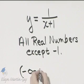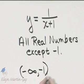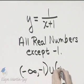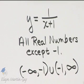From negative infinity to negative one with a parenthesis, union negative one to infinity. This is another way of writing the domain using interval notation.